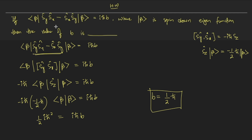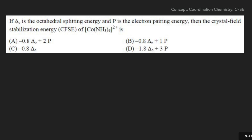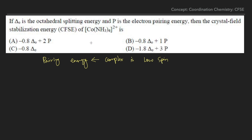Now let's jump to today's question, which is from coordination chemistry — the CFSE concept. The question asks: if Δo is the octahedral splitting energy and P is the electron pairing energy, what is the CFSE of Co(NH₃)₆²⁺? Pairing energy only comes into play for low spin complexes — it is essentially the effect of the ligand causing electron pairing in the complex.